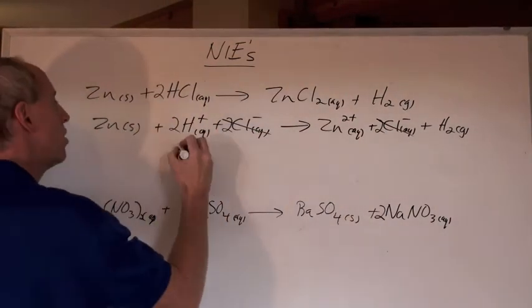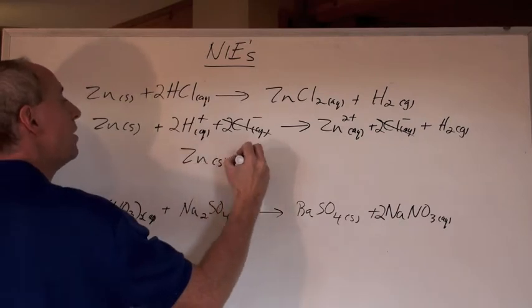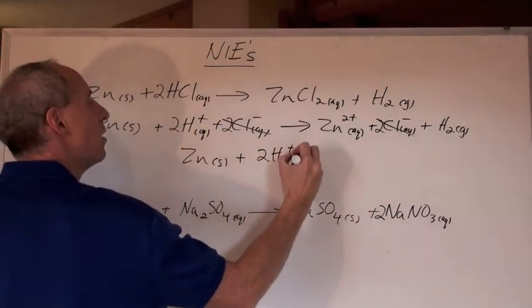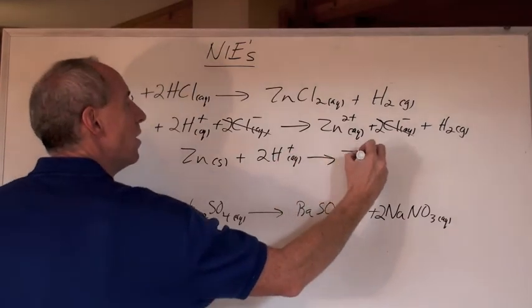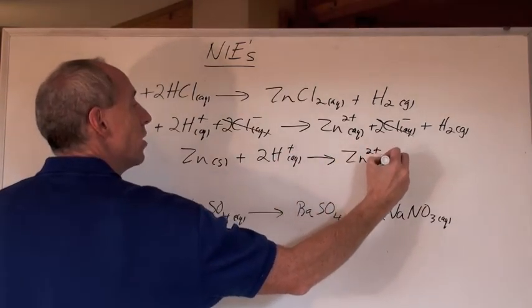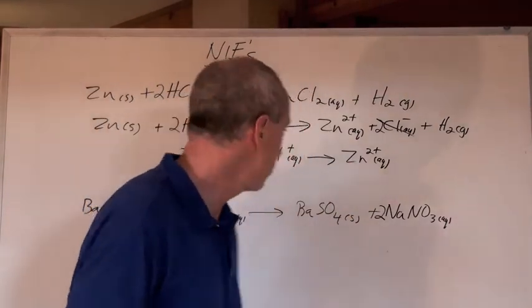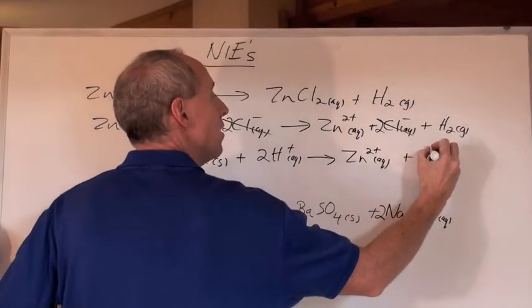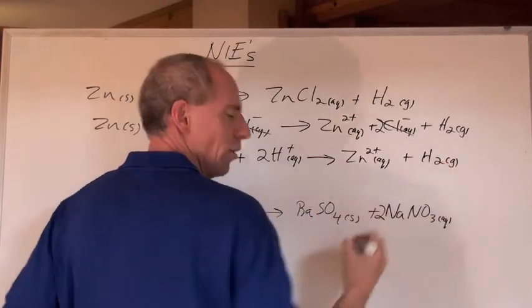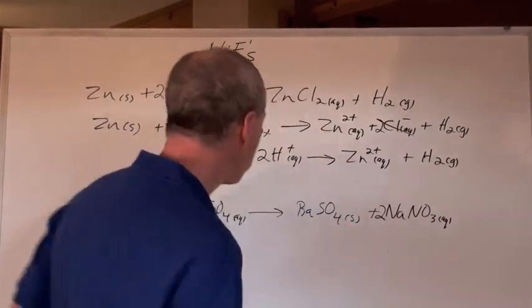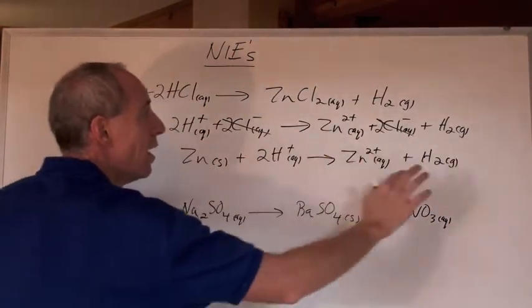What is the net reaction? Well, the zinc solid does react with something here. It reacts with H positive ions in solution to form zinc ions. So what actually does happen here is zinc metal loses electrons to the hydrogen ions which gain electrons and then turn into hydrogen gas. That's called the redox reaction. We'll talk about that later.